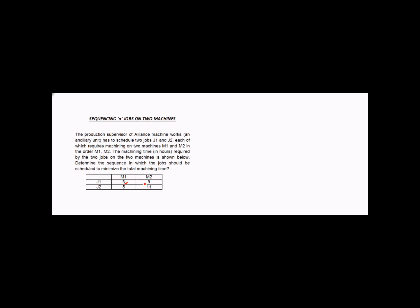The machining time in hours required by the two jobs on the two machines is given. We have to determine the sequence in which the jobs should be scheduled to minimize the total machining time. J1 on M1 takes 3 hours, J1 on M2 takes 9 hours, J2 on M1 takes 5 hours, and J2 on M2 takes 11 hours. Each job must be processed on M1 first and then on M2.